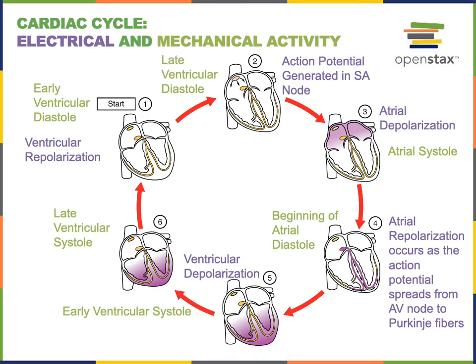The cardiac cycle is the period of time for one heartbeat, beginning with contraction of the atria and ending with relaxation of the ventricles. The word for contraction of a heart chamber is systole, and the word for relaxation of a heart chamber is diastole. Contraction of cardiac muscle is excited by intrinsic pacemaker cells found in the SA node within the right atrium of the heart.